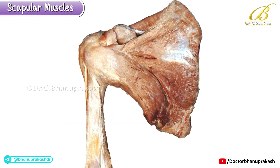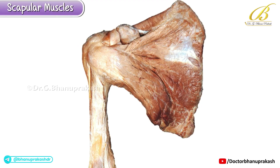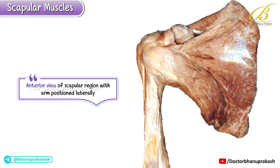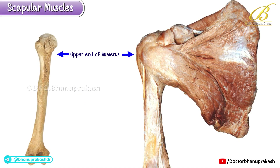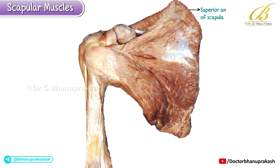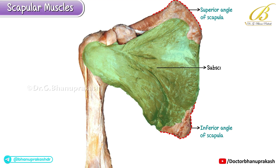Today's topic in cadaveric anatomy is the scapular muscles. This image presents the anterior view of the scapular region, with the arm positioned laterally. The upper end of the humerus is visible, showing two prominent elevations: the lesser tubercle and the greater tubercle. The superior angle of the scapula forms the upper projection, while the inferior angle points downward.